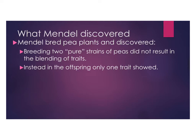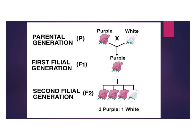Here's what Mendel discovered. He bred pea plants and found that if he bred two pure strains — strains that always had the same trait — he did not get a blending of traits, which surprised him. Instead, only one of those traits would show in the offspring. For example, when he bred a pure purple flower plant with a pure white flower plant, you might expect lavender or pink, but you got all purple in the next generation.